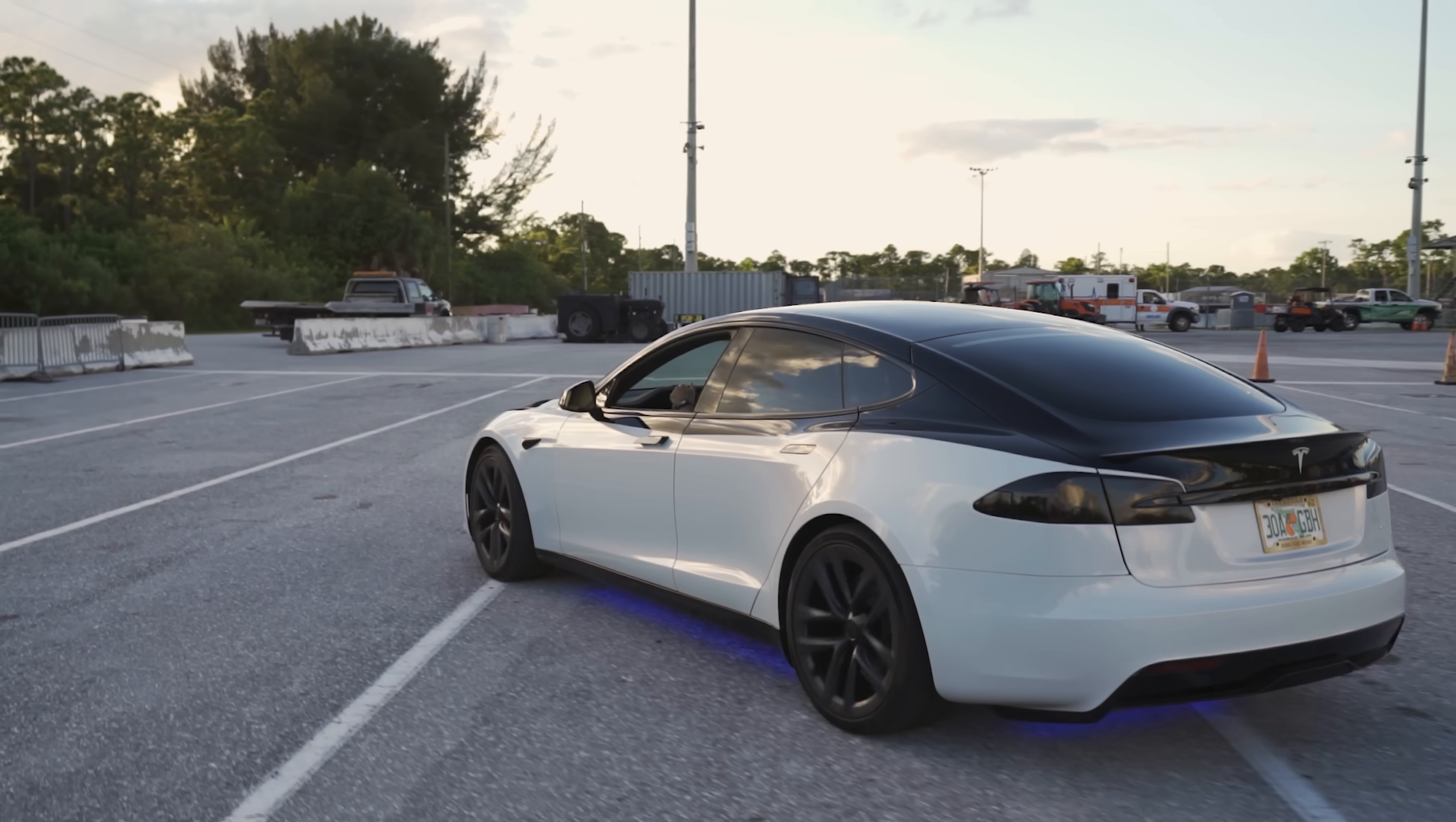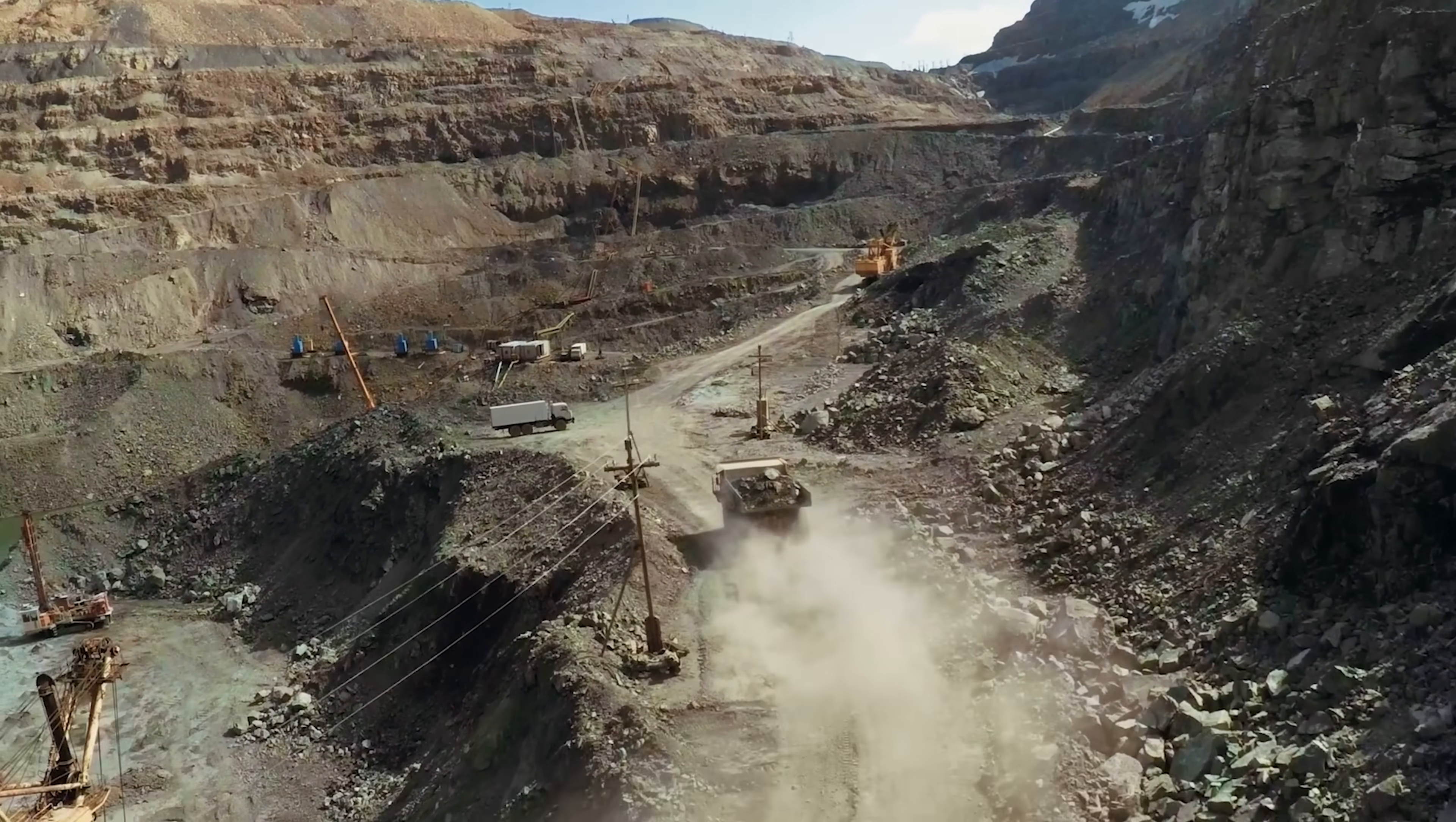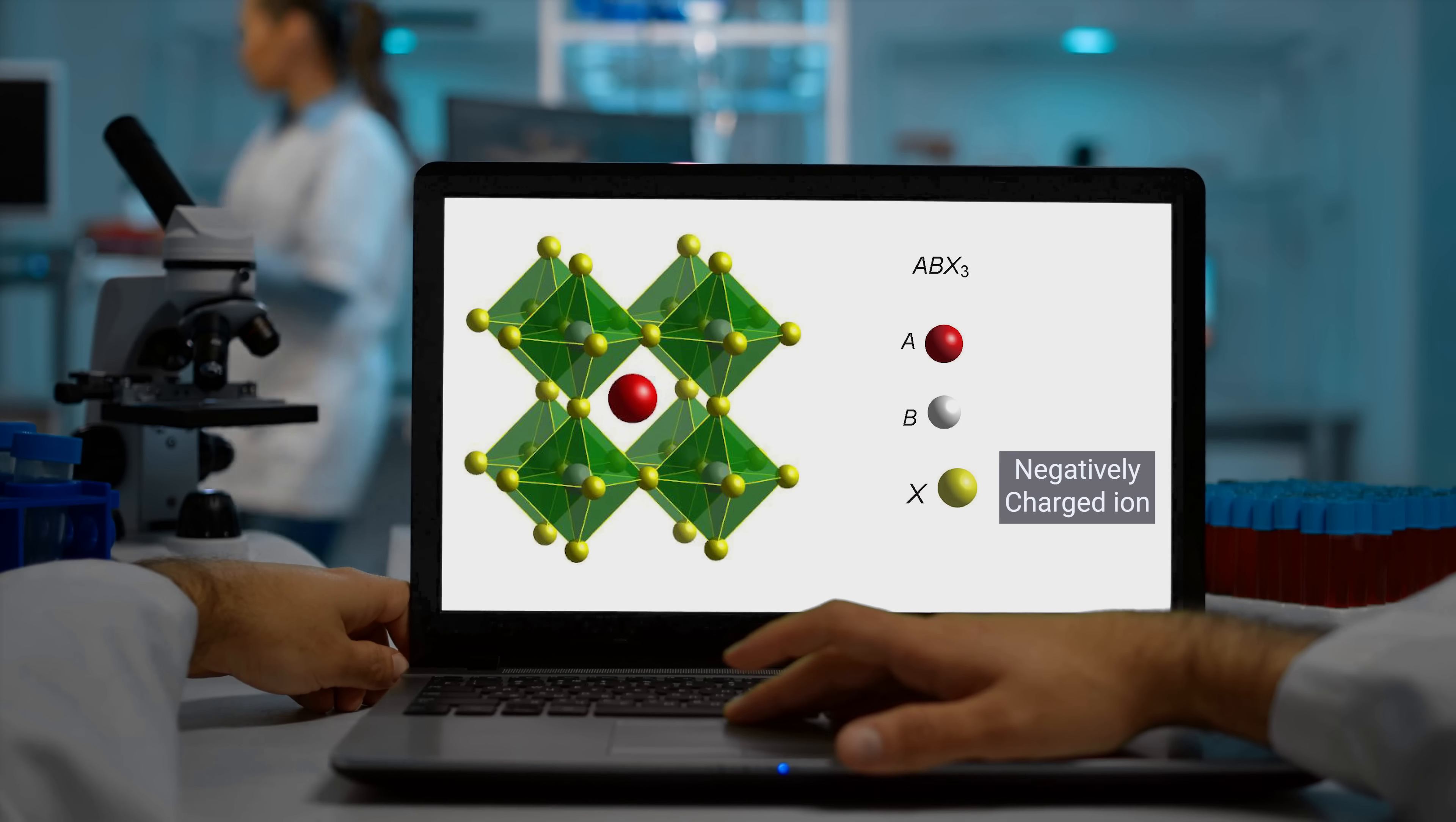But before we cover your Tesla Model S Plaid in perovskite solar, what exactly is this revolutionary crystal? The perovskite crystal structure was first discovered as the naturally occurring mineral calcium-titanium oxide. But the perovskites used in solar cells don't need to be mined from the Earth. A perovskite is any material with a crystal structure following the formula ABX3, where A and B are two positively charged ions, often of different sizes, and X is a negatively charged ion.